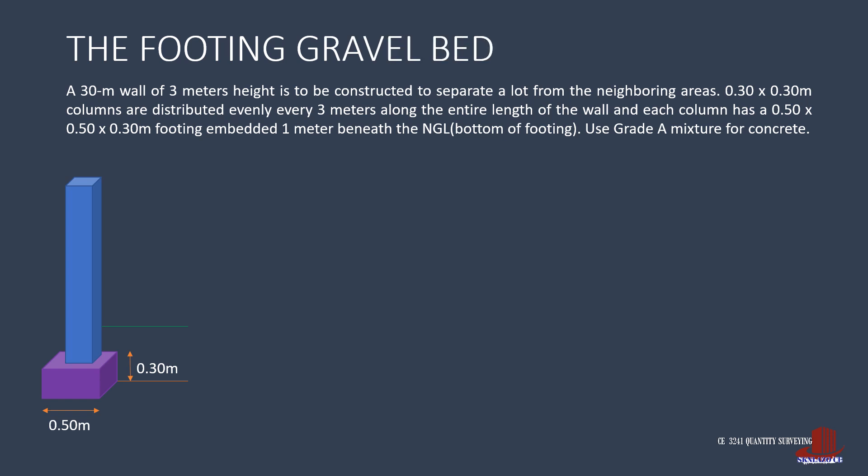The footing gravel bed is poured before the footing with a standard depth of 2 inches. With 11 footings, the volume of the gravel bed is 11 multiplied by the footing area of 0.5 by 0.5, then multiplied by the gravel bed thickness of 2 inches or 0.05 meters, estimated as 0.1375 cubic meters.